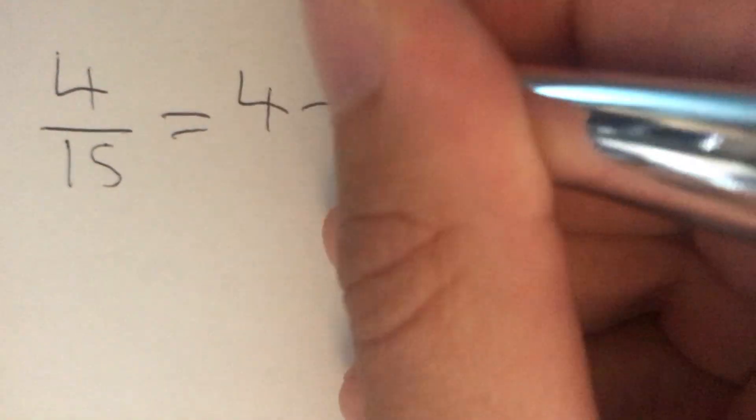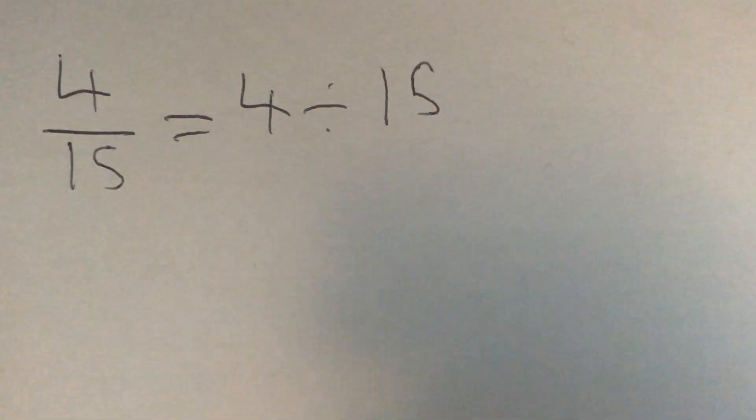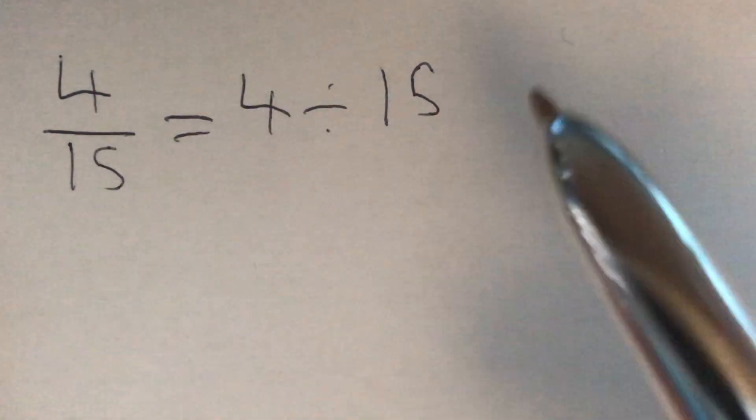So we're asked to write 4/15ths as a recurring decimal using dot notation. Well, the first thing we need to think about is the fact that 4/15ths really just means 4 divided by 15. All of our fractions are really just divides.